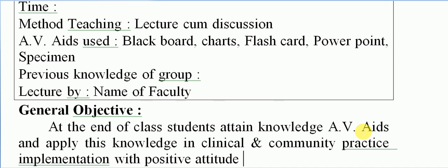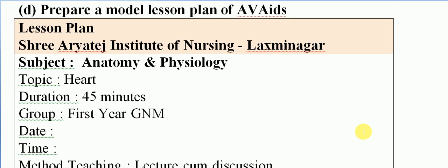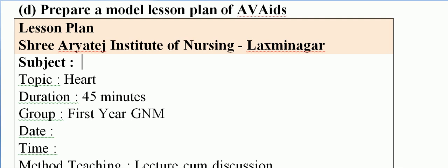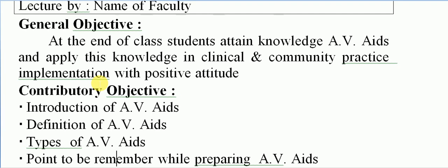Then we must create our general objective. Our subject is Community Health Nursing and our topic is AV aids. The general objective is: at the end of the class, the student will attain knowledge of AV aids and apply this knowledge in clinical and community practice with a positive attitude.